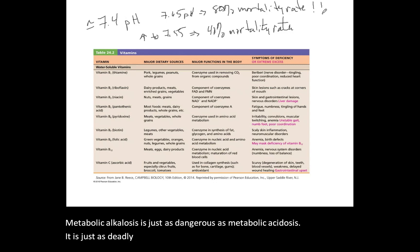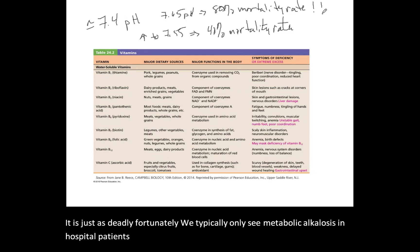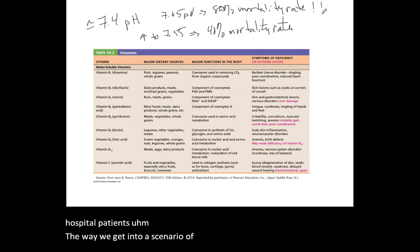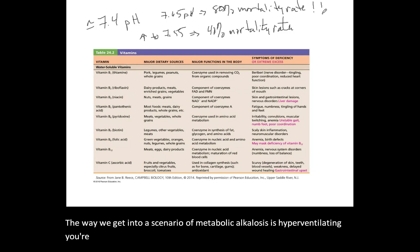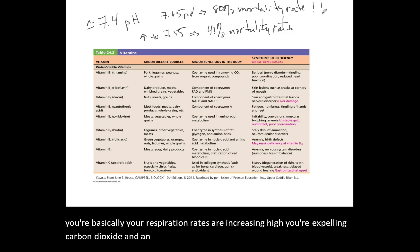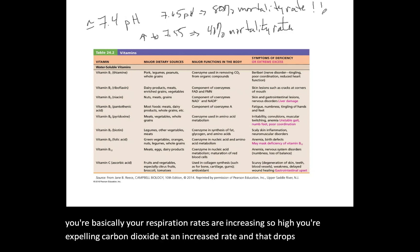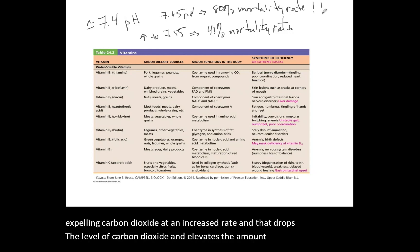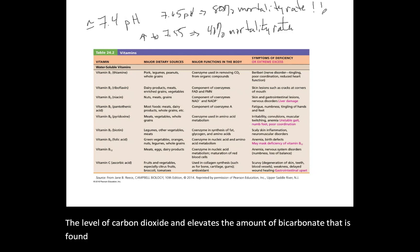We typically only see metabolic alkalosis in hospital patients. The way we get into a scenario of metabolic alkalosis is hyperventilating — your respiration rates increase so high that you're expelling carbon dioxide at an increased rate, which drops the level of carbon dioxide and elevates the amount of bicarbonate found within the body, increasing the pH into an alkaline range.